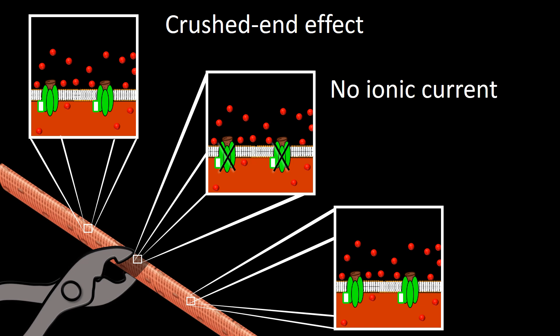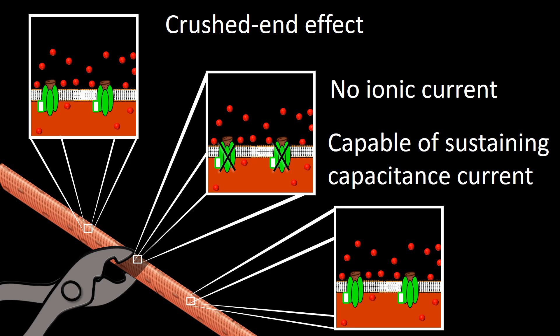Hence, this segment of membrane is not capable of generating ionic current. But since the membrane is intact, it is capable of sustaining capacitance current.